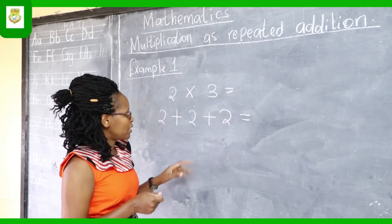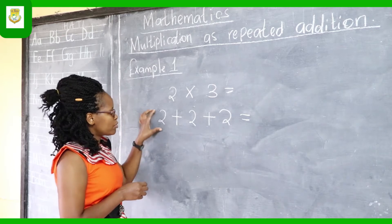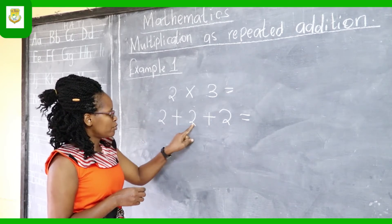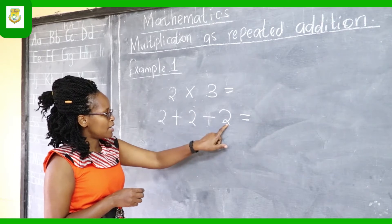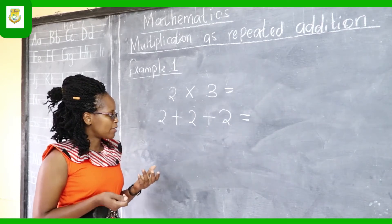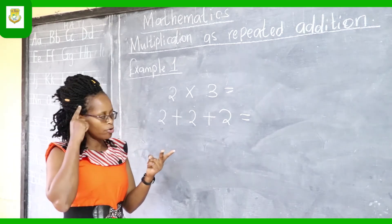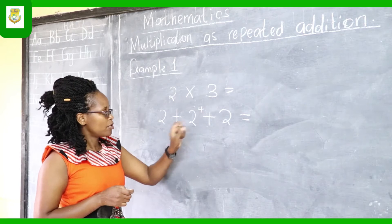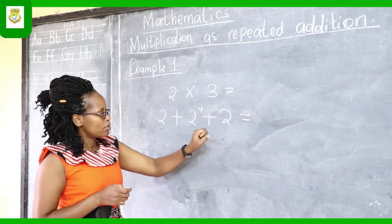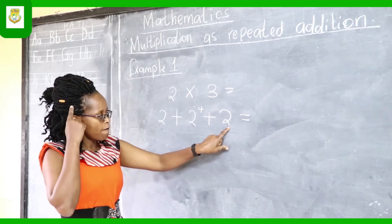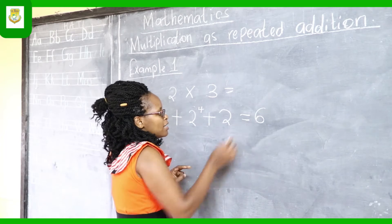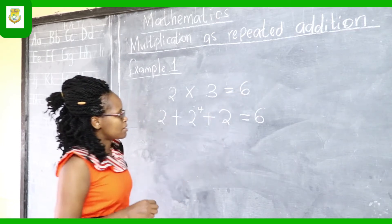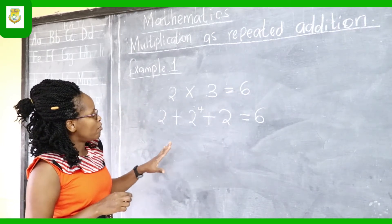Let's work it out and find our answer. We are going to use the concept of adding three single-digit numbers. Two plus two — we write our answer here, then we add that answer to two to get our final answer. We have two on our fingers and two on our head: two, three, four. So we have four. Now we still have two more to add: four plus two gives us four, five, six. Our answer is six, and we reflect that in the multiplication sentence — two times three equals six.